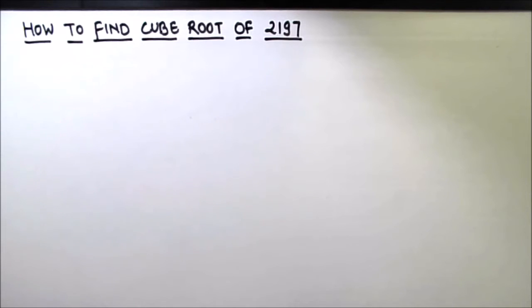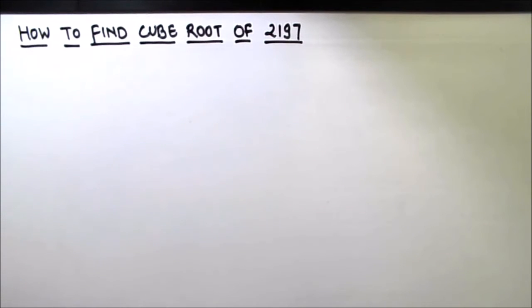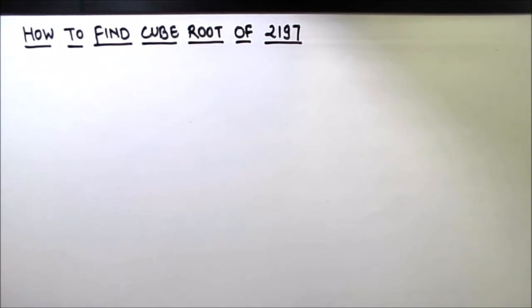For finding the cube root using the prime factorization method, we need to find the prime factors of the number by dividing it by prime numbers and writing the number as the product of its prime factors.